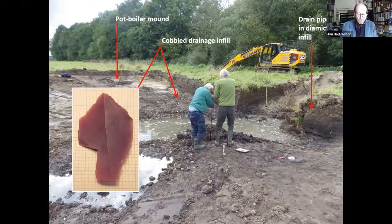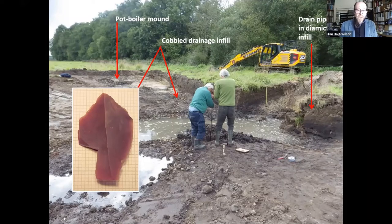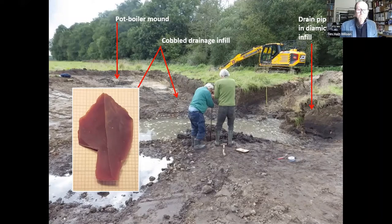We did find one prehistoric flint flake in the organic-rich mud layer, but it was not of any diagnostic industry. It started out as grey flint and has been dyed brown by the peaty soil.